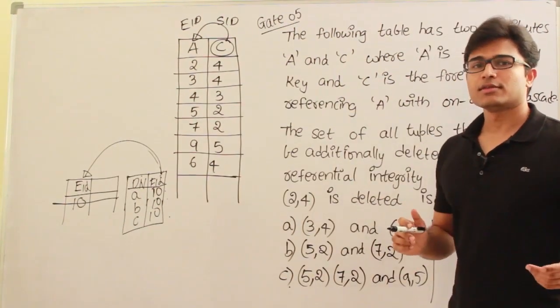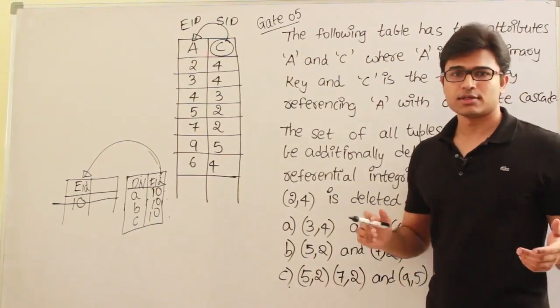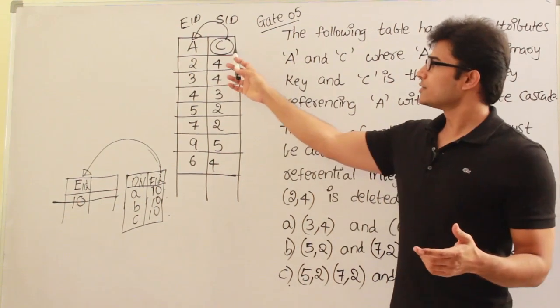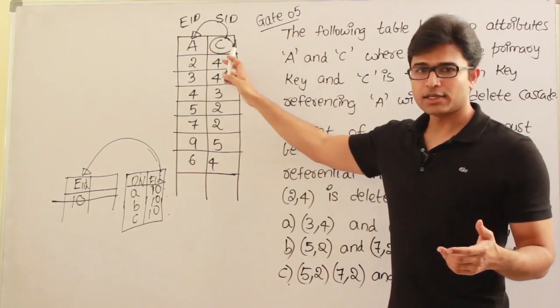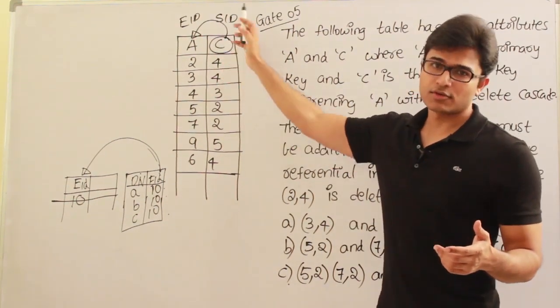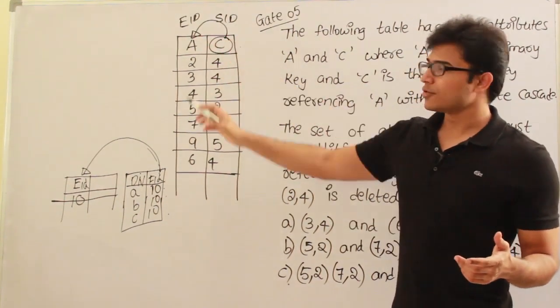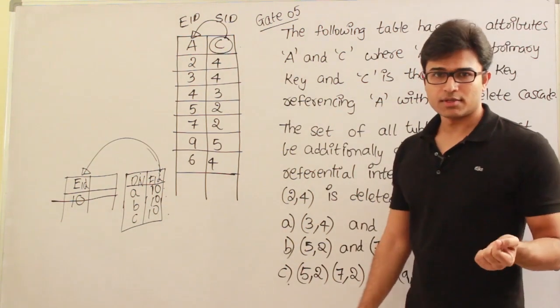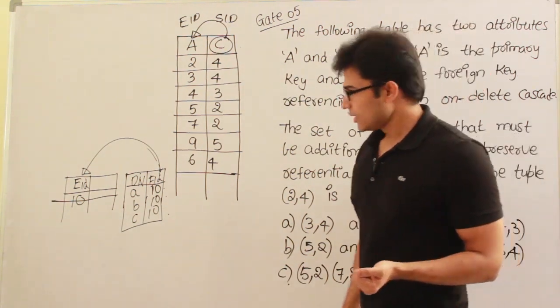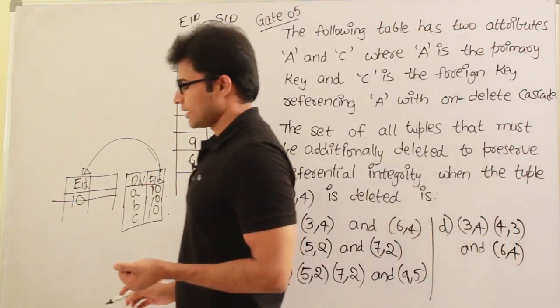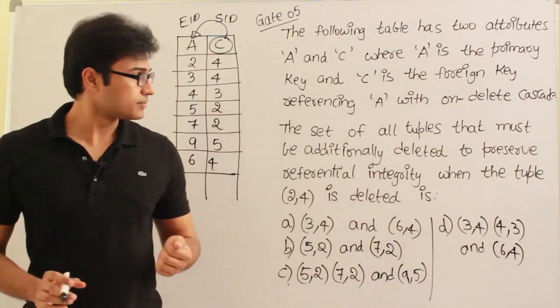The same thing can be applied in this recursive relation. It is a recursive relation because on the same table there is a key which is referring to some other attribute in the same table.